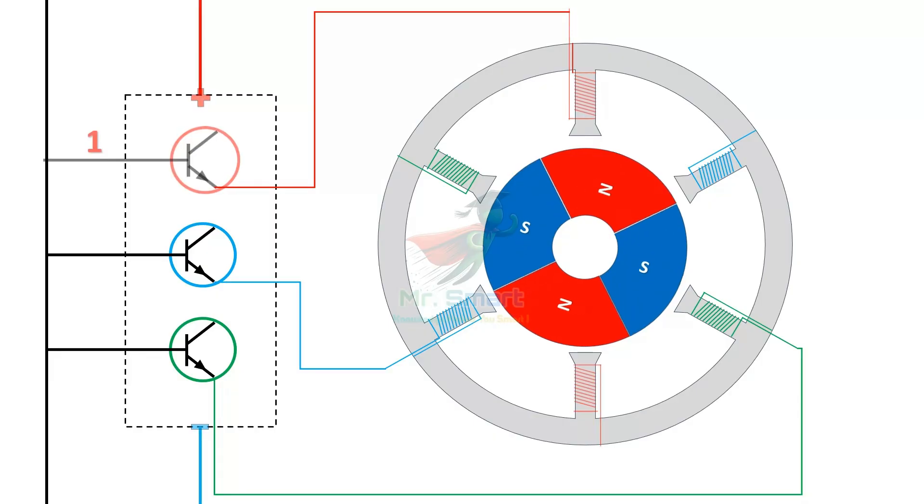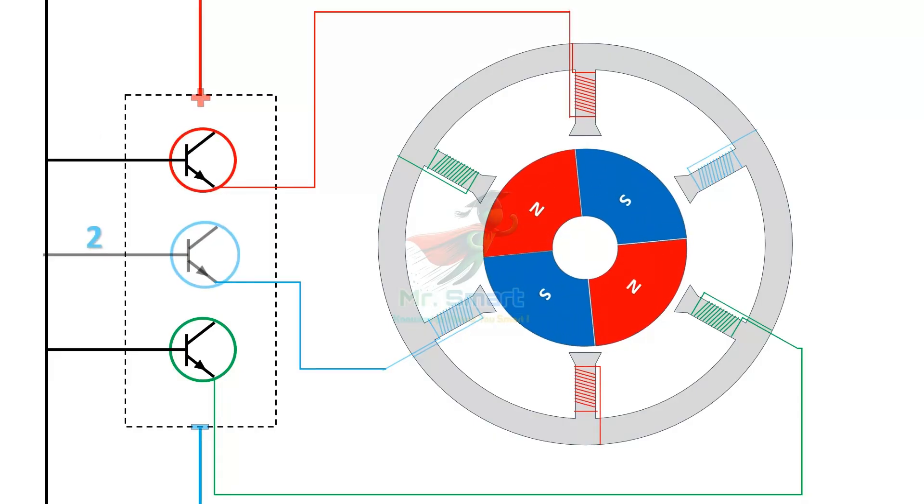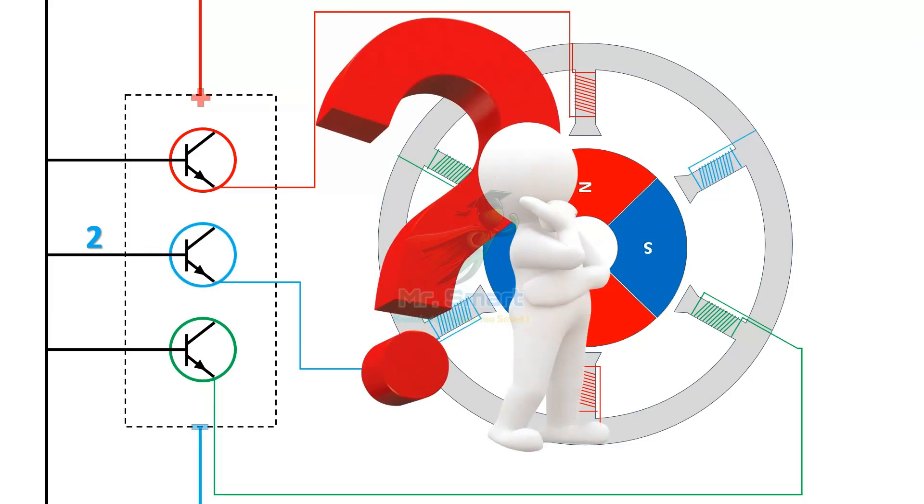But when it's stopped in the middle of the sequence, how does the driver circuit know which winding it needs to start from? Definitely, it is an important question to be asked.